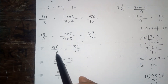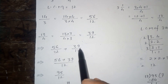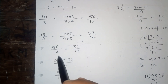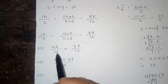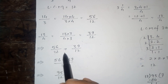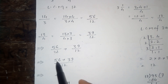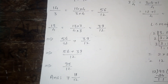Then after, we have 56 upon 12 plus 39 upon 12. These two fractions are like fractions, so their denominators are equal — that is 12. In the numerator we write 56 plus 39, which gives 95 upon 12.